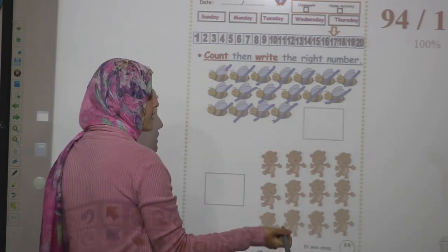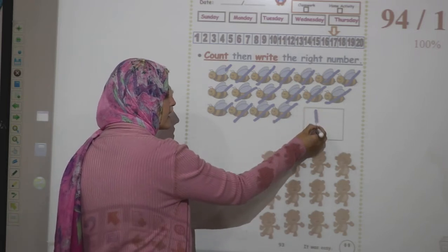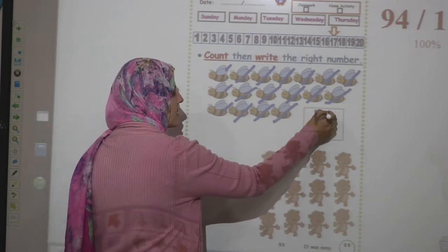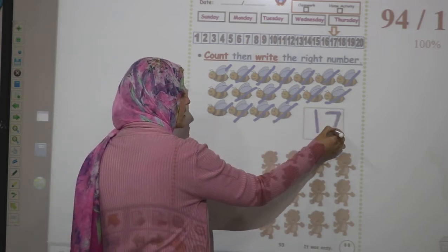How do we write number 17? Stick down, sleeping dash and slash.